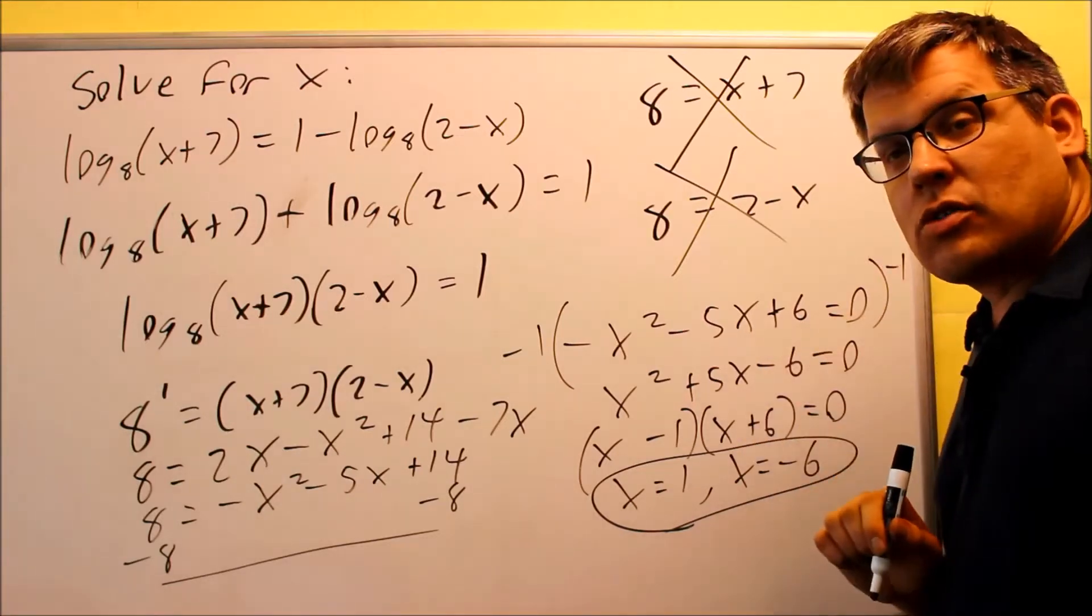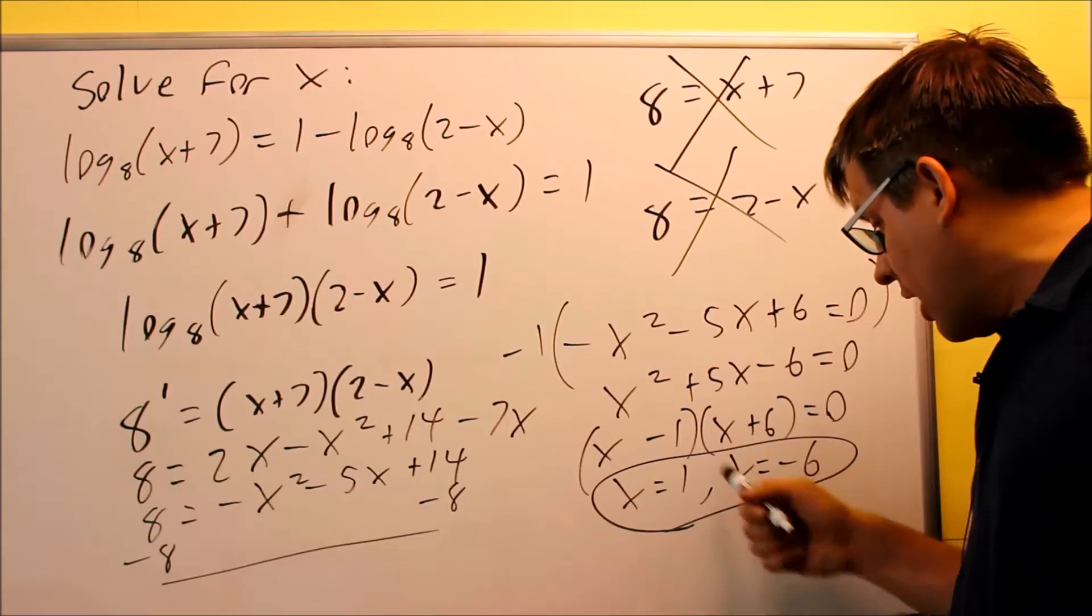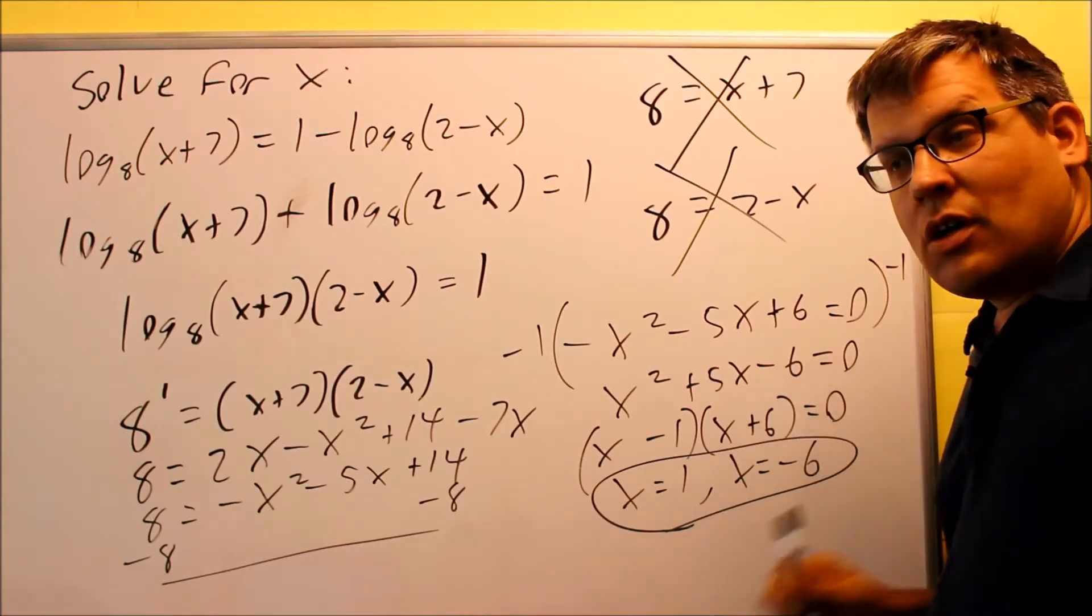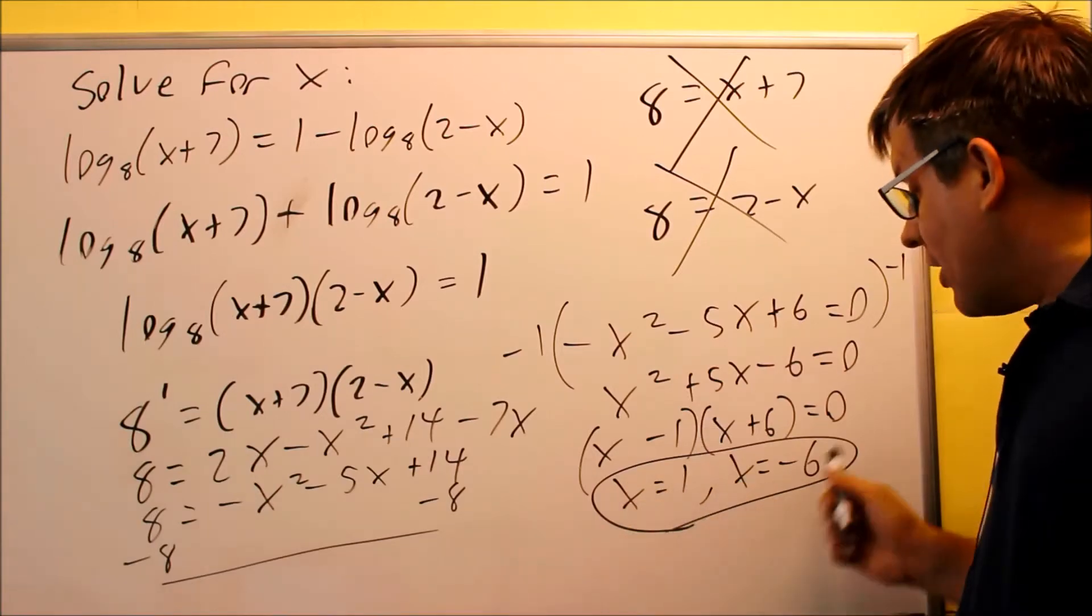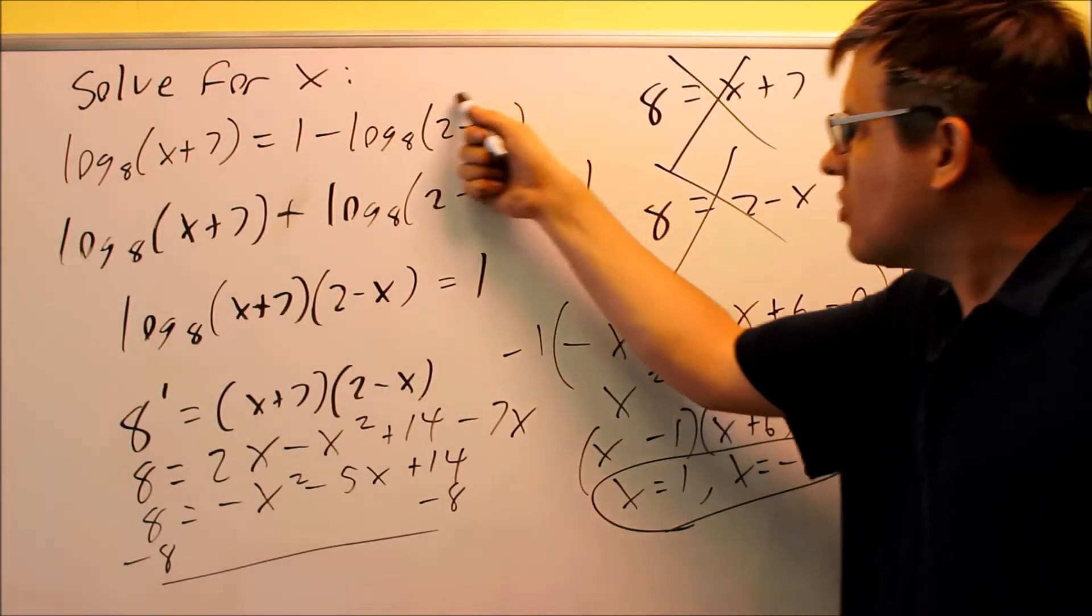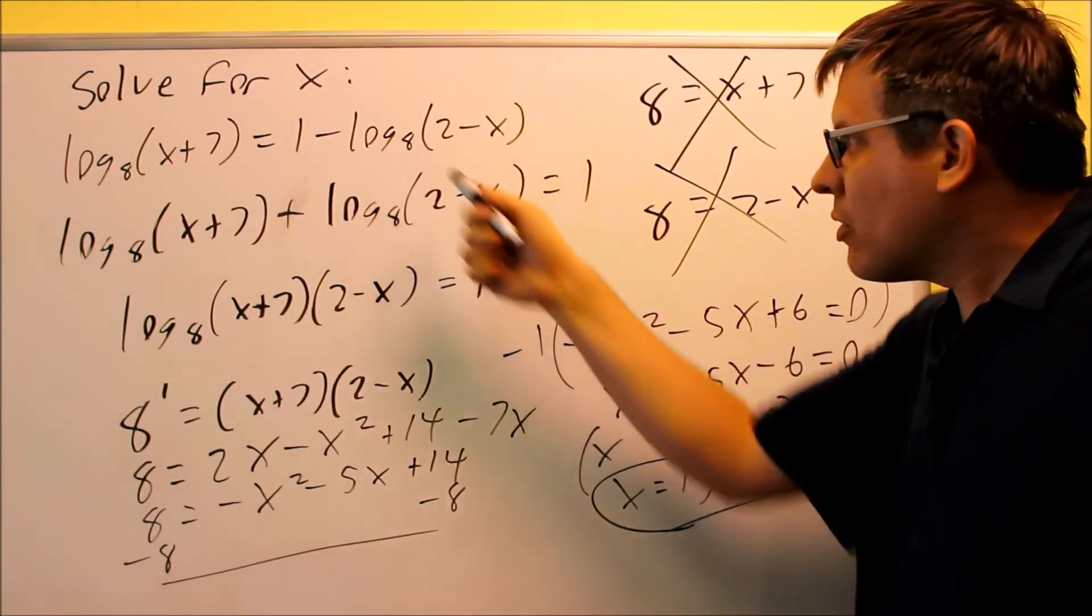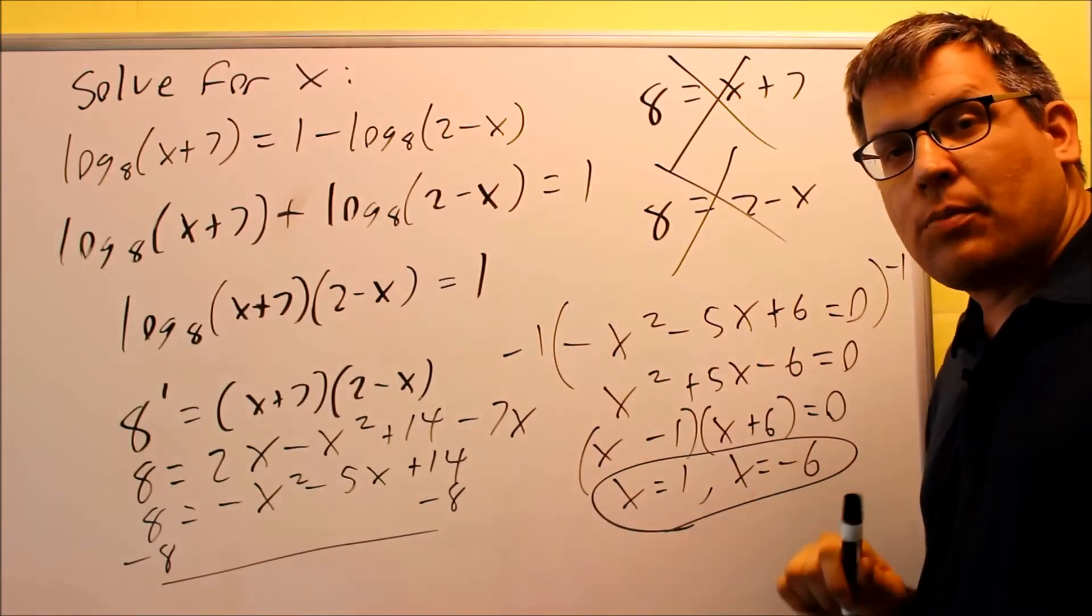So the question I'd be thinking is, I thought you told us that no negative numbers are allowed as our answer, so why does negative 6 work? Okay, the answer itself can be negative, but the answer that you have, if you put it into the expression, that result inside the log cannot be a negative number.